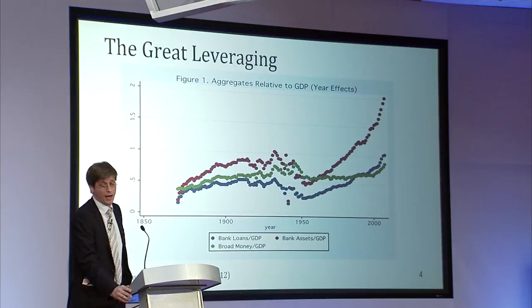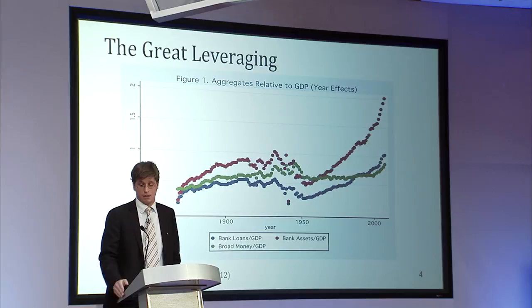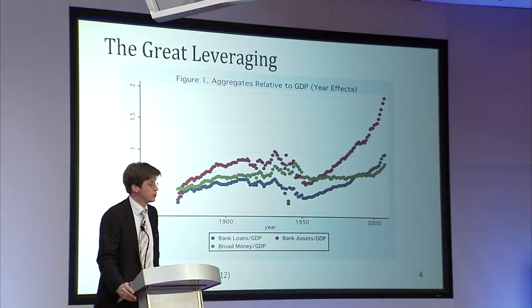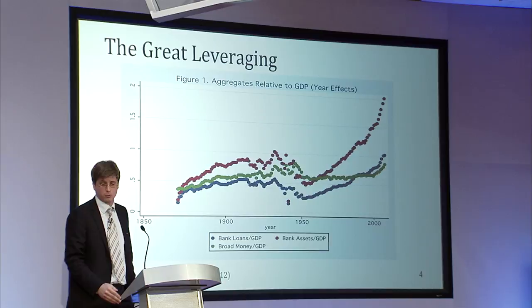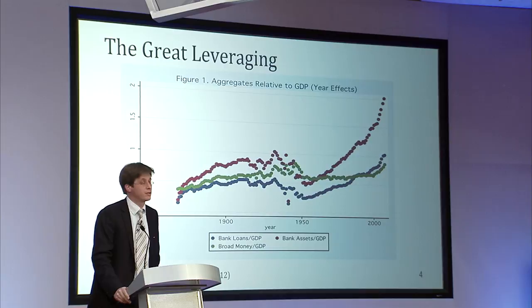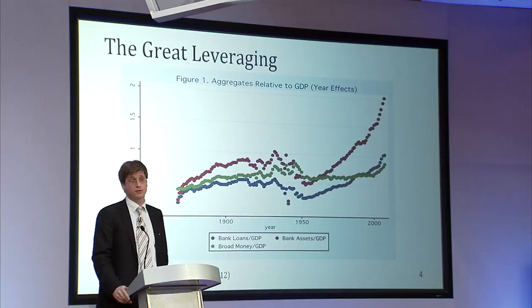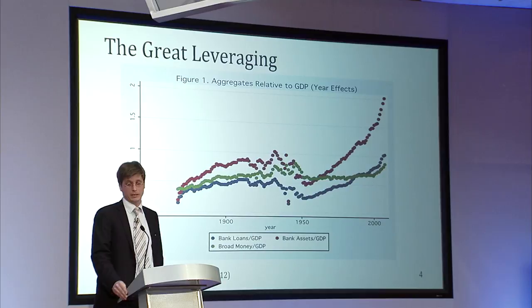But these relationships break down after World War II — credit and money decouple. There is an argument about the exact timing: is it the post-World War II immediate period, or when Bretton Woods breaks down? But credit and money decouple in the second half of the 20th century. And a very odd thing happens in the past 20 years: the credit aggregate cuts through the money aggregate, reflecting the rise of non-monetary financing of the banking system — wholesale funding and other non-monetary liabilities that banks use to fund credit.